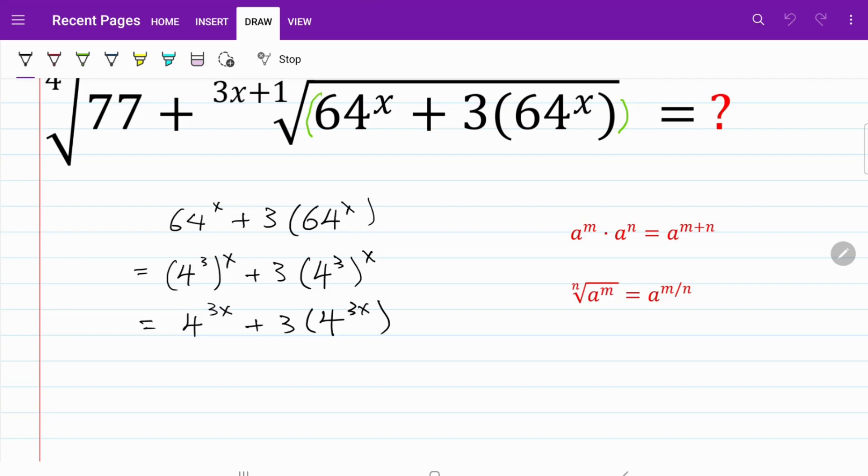For the next step, we are going to factorize this expression. The common term here is 4 to the power of 3x, so we are going to isolate it.